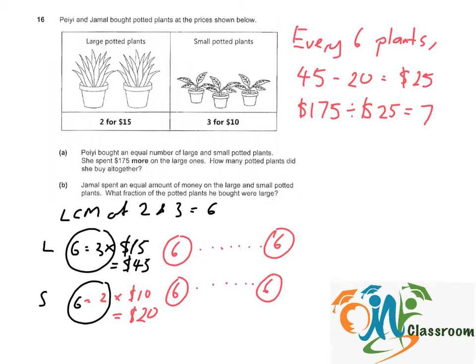In one set, there will be 6 large and 6 small. So 7 sets will be 7 times 6 large and 6 small, which adds up to 12. So 7 times 12 equals 84 plants in total for part A.